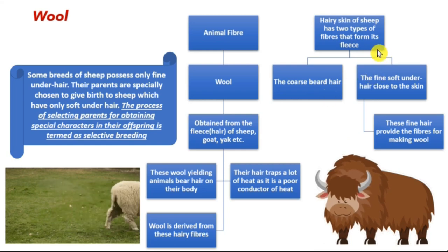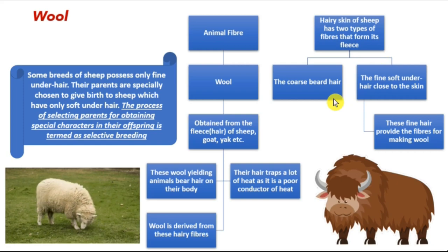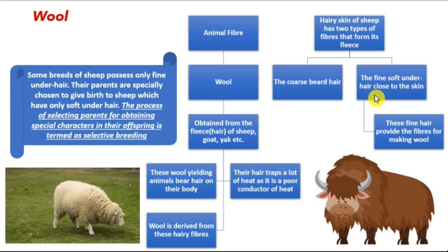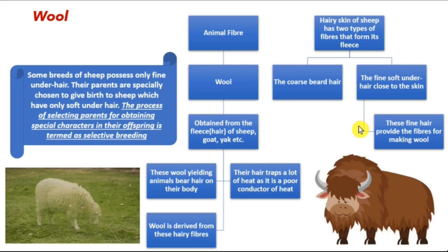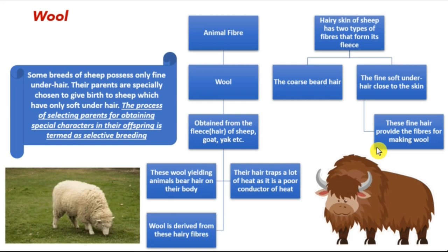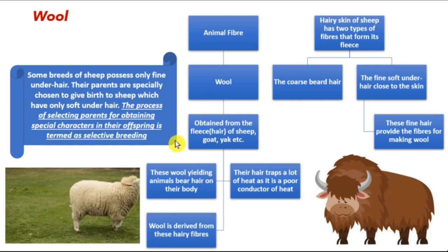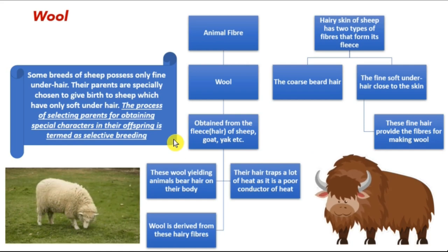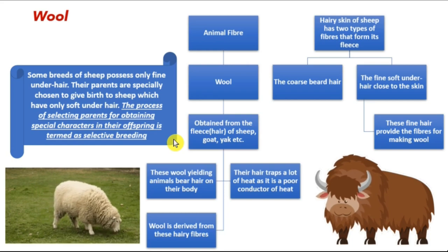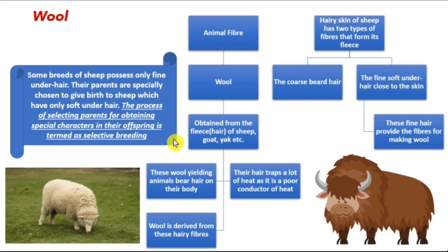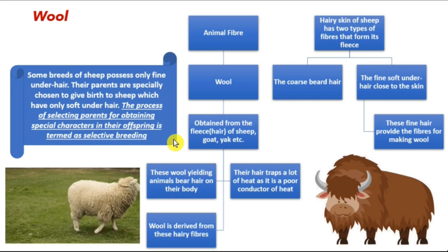The hairy skin of sheep has two types of fibers that form its fleece: the coarse beard hair on the upper part, and the fine soft under hair closer to the skin. These fine soft under hairs are used for making wool. Some breeds of sheep possess only fine under hair and are in huge demand because they produce more wool. Their parents are specifically chosen to give birth to sheep with only soft under hair, and this process of selecting parents for obtaining special characters in their offspring is termed selective breeding.